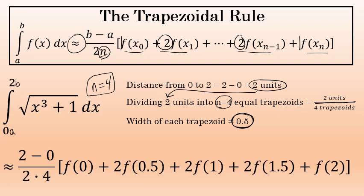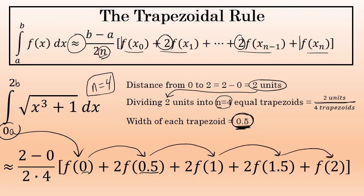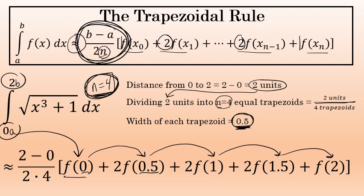Because I'm starting at a equals 0 and the width of each trapezoid is 0.5, each successive x-value is half a unit more than the previous one. So the x-values go from 0 to 0.5 to 1 to 1.5, ending at b equals 2. Looking at the formula, b minus a over 2n is 2 minus 0 over 2 times 4. Since we're using four trapezoids, there are five terms in the brackets. The first and last terms have a coefficient of 1, and all middle terms have coefficients of 2.